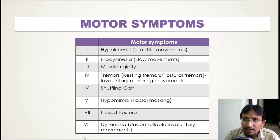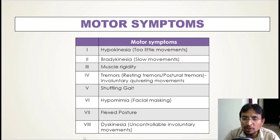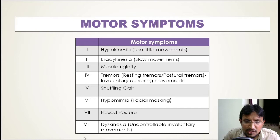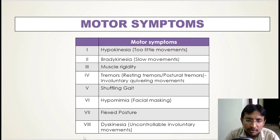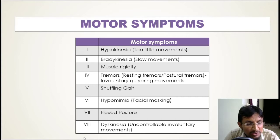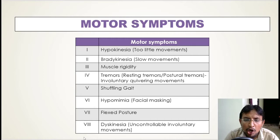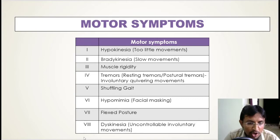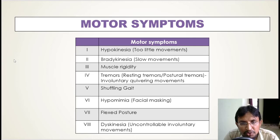The seventh cardinal symptom is flexed posture, which arises due to abnormal tonic contraction of muscles that control the patient's posture, leading to a flexed posture. Lastly, dyskinesia refers to uncontrolled involuntary movements that may occur either with long-term use of the levodopa drug or when a patient has been suffering from Parkinson's disease for a long time.